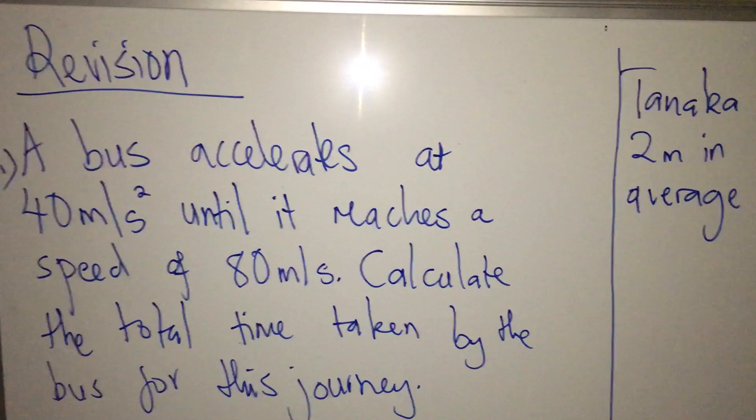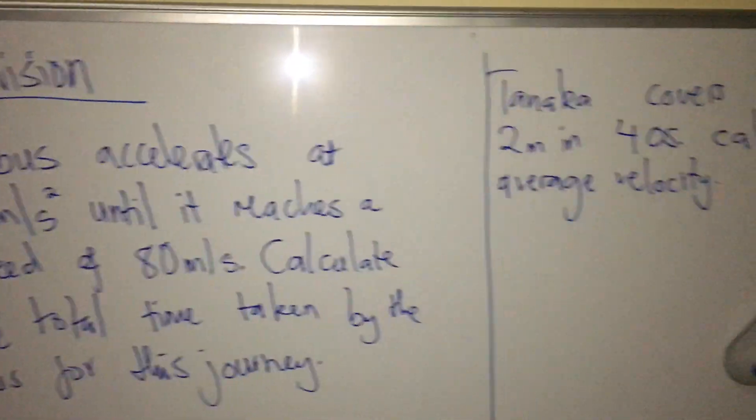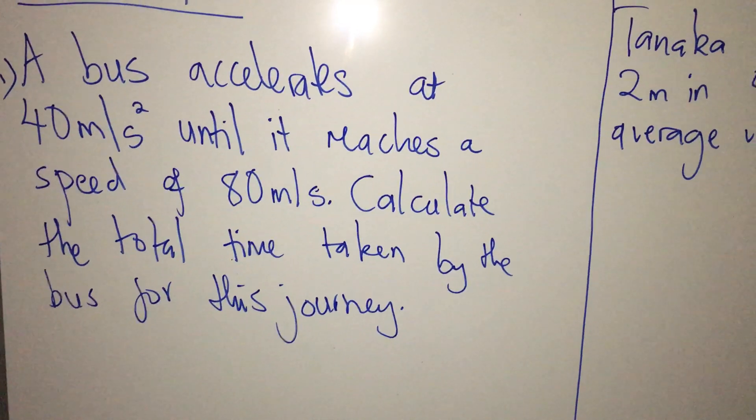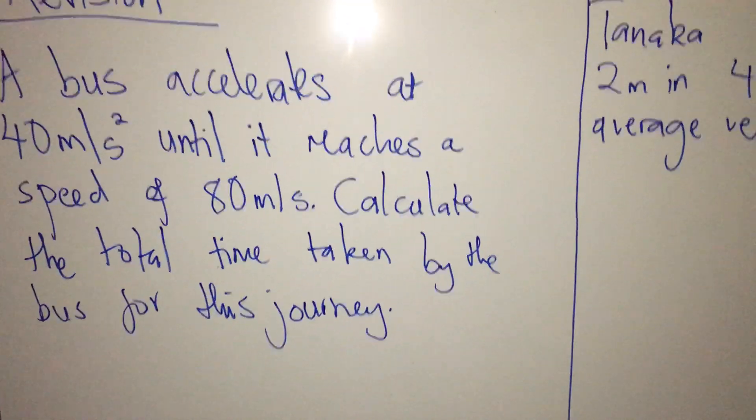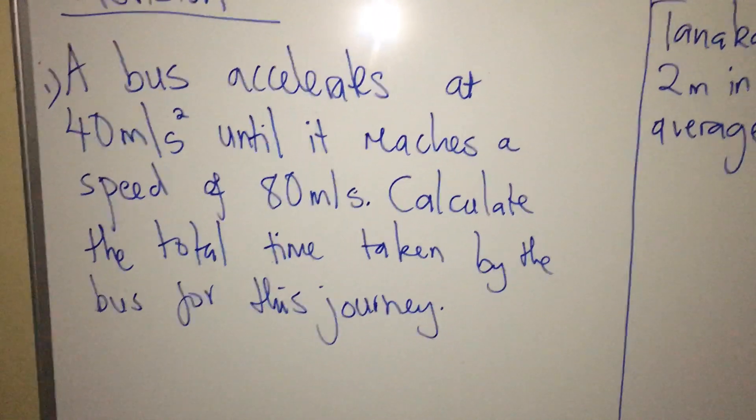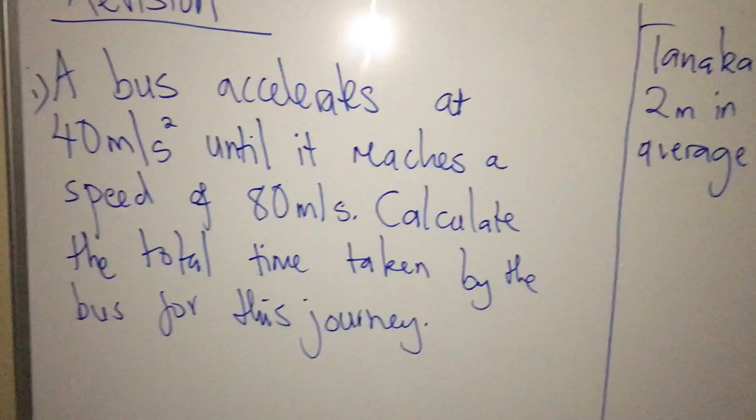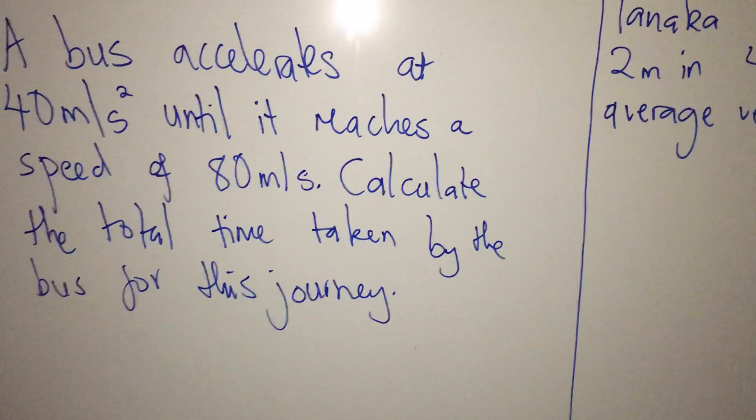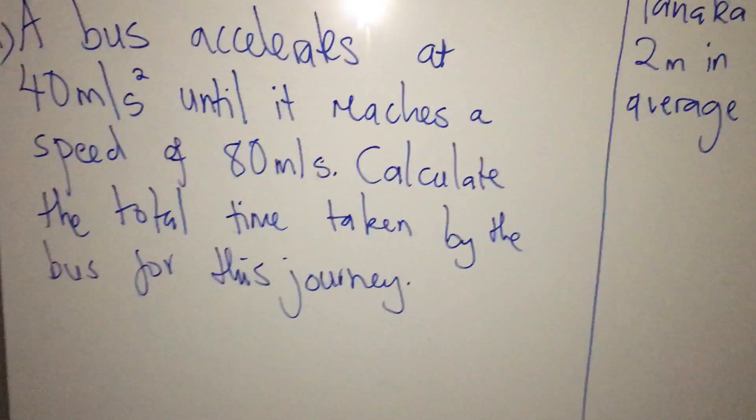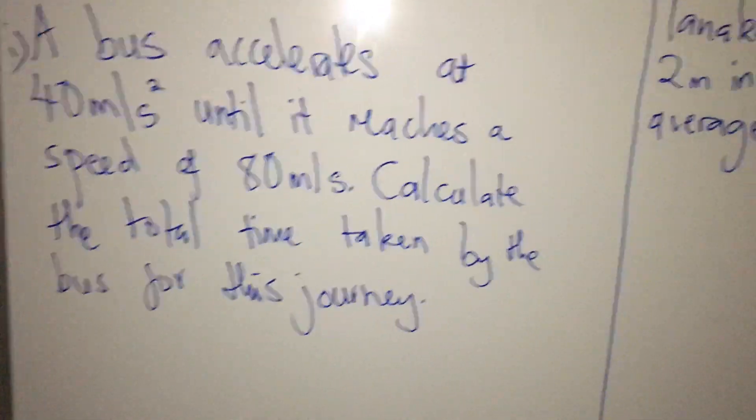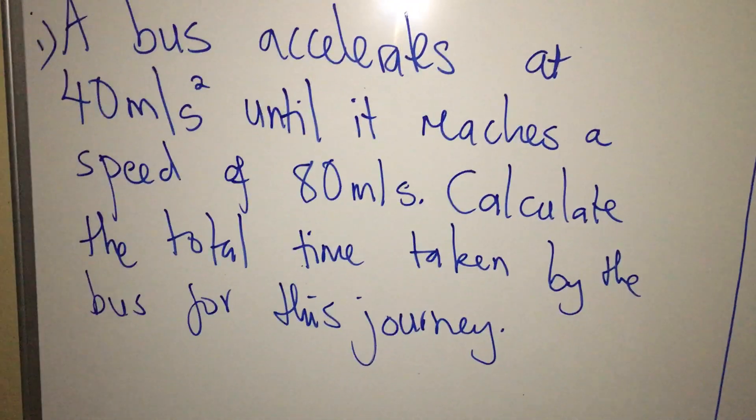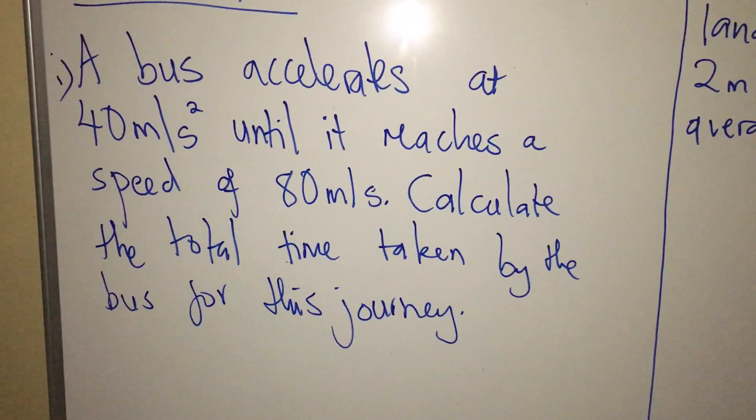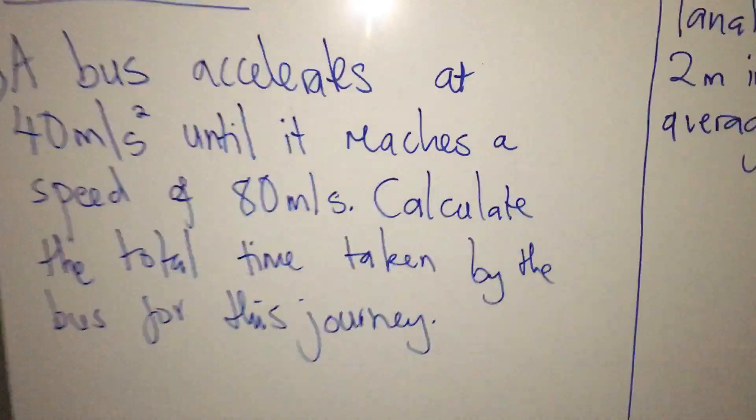I gave you a task to go and do at your place after the tutorial. So we have the first question: a bus accelerates at 40 meters per second squared until it reaches a speed of 80 meters per second. Calculate the total time taken by the bus for this journey. When given a situation like this, first of all you have to identify what is it that you are given and what is it that you're not given from the context.